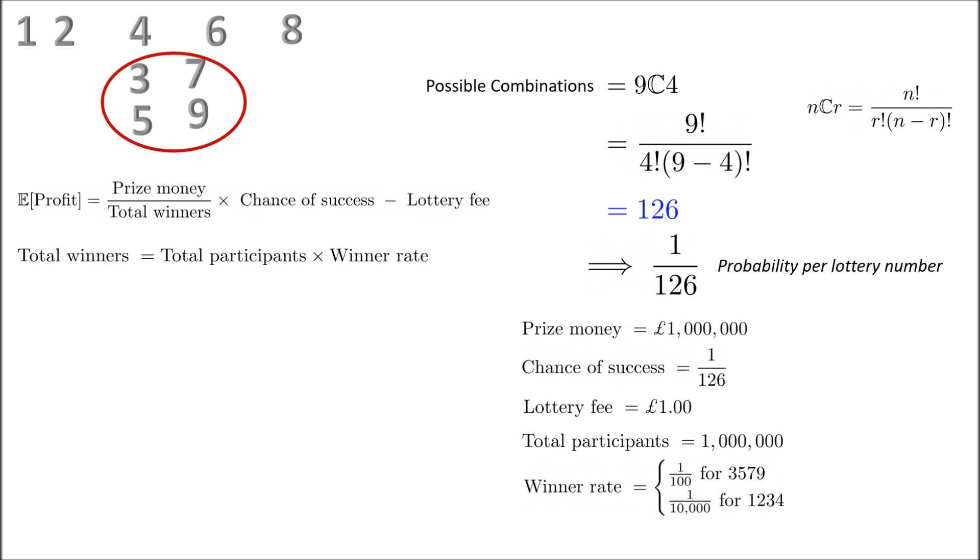Now let's plug in these numbers for our two cases. So case A considers choosing the numbers 3579. Putting the numbers into that formula gives us a value of negative 21 pence. So on average, a person will lose 21 pence every week by choosing 3579 as their four-digit number.